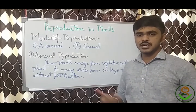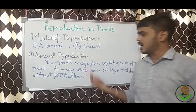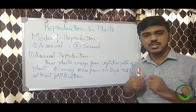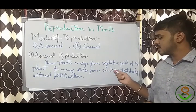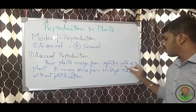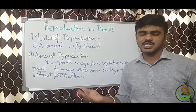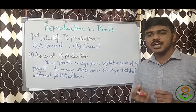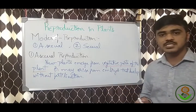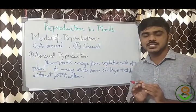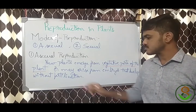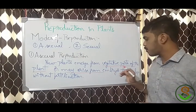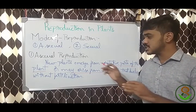There are two modes of reproduction: asexual and sexual. Asexual reproduction means production of new plants from two sources — one is from the vegetative part of the plant itself, and the other is from unfertilized reproductive parts, which we call apomixis. So new plants in asexual reproduction come from either apomixis or vegetative reproduction.